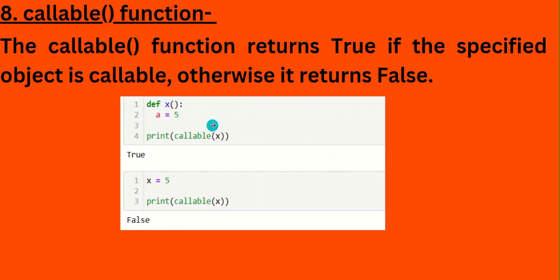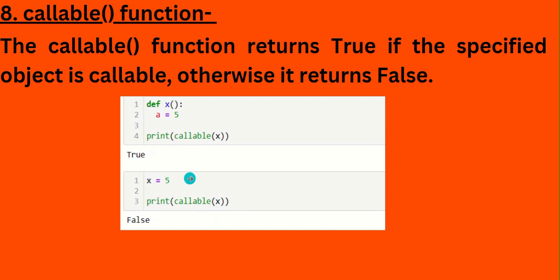Next, the 'callable' function. It returns true if the specified object is callable, else it returns false. For example, a properly declared function 'def x():' with statement a = 5 is callable, so the output is true. However, if x = 5 is just a variable assigned the value 5, there is no function declaration, so it is not callable and the output is false.